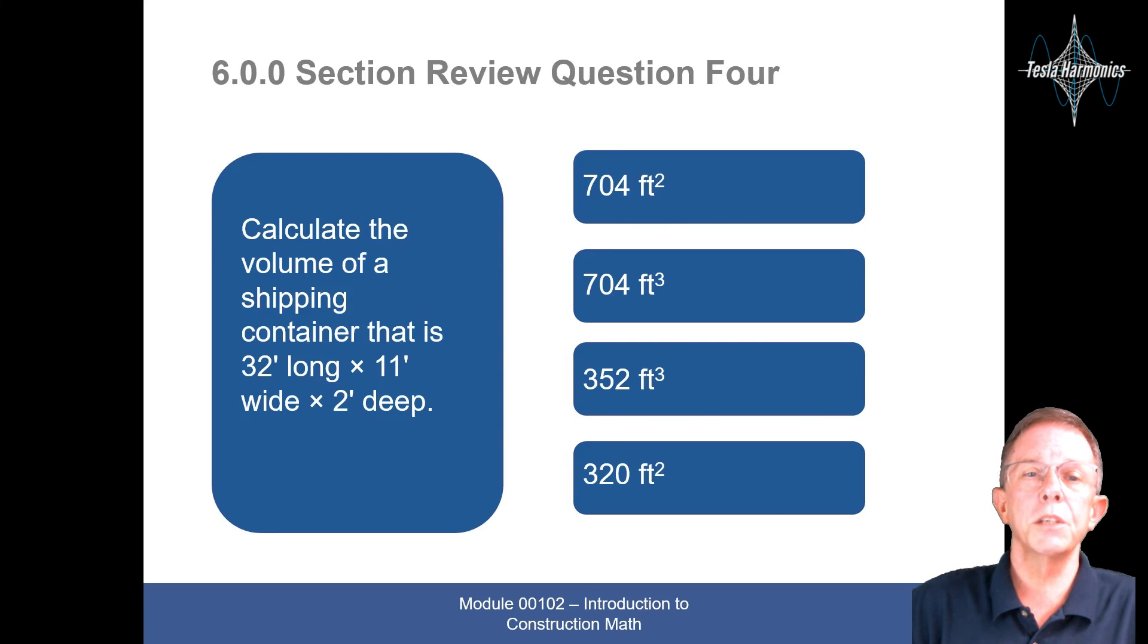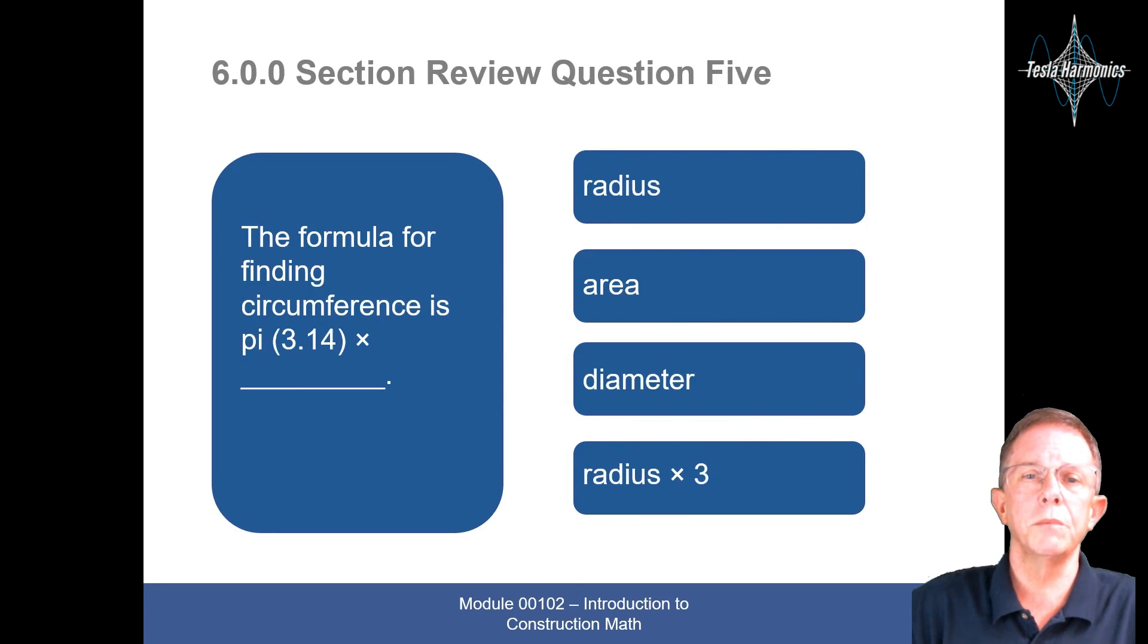Calculate the volume of a shipping container that is 32 foot long, 11 foot wide, and 2 foot deep. Well, that would be 704 square foot, 704 cubic meters, 352 cubic feet, or 320 square feet. And that would be 704 cubic feet.